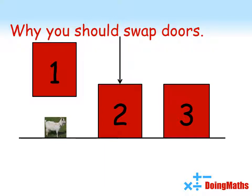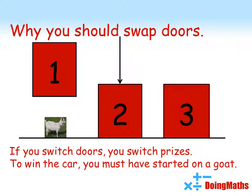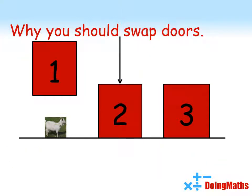Therefore, if we change doors, we change prizes, either from car to goat or from goat to car. You choose to switch doors. For this door to be the car, you need to have started on a goat door.